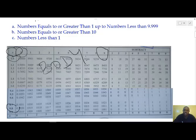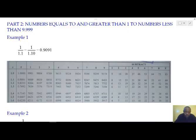The fourth digit can either be 1, 2, 3, or up to 9. And this is what we're going to refer to as our difference column, just as we have done with the other tables.